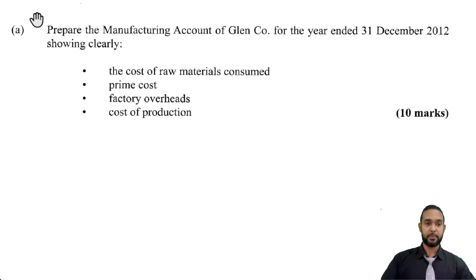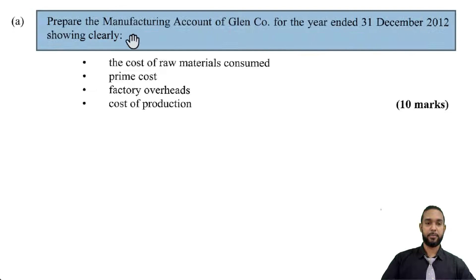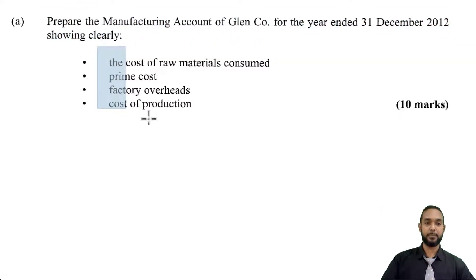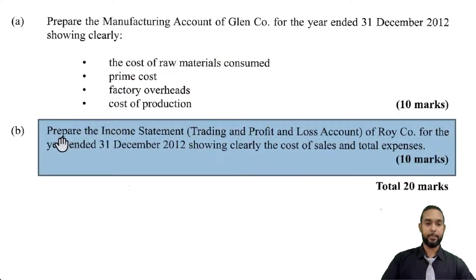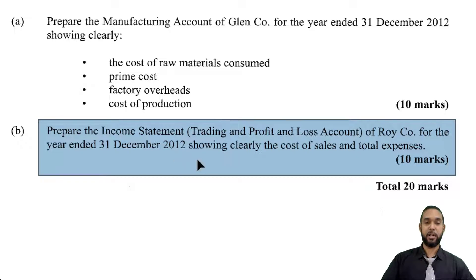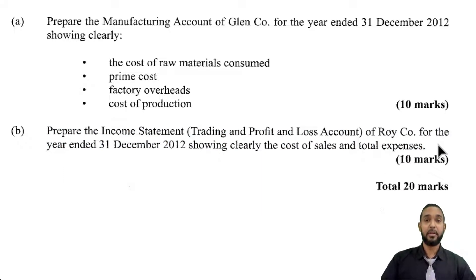Let's take a look at the requirements. Part A says we are to prepare the manufacturing account of Glen Company for the year ended 31st December 2012, showing clearly the cost of raw materials consumed, prime cost, factory overheads, and cost of production. That's going to be followed by preparation of the income statement — trading and profit and loss account — for Roy Company for the year ended 31st December 2012, showing clearly the cost of sales and total expenses. We're going to work through these one at a time, starting with the manufacturing account for Glen Company.